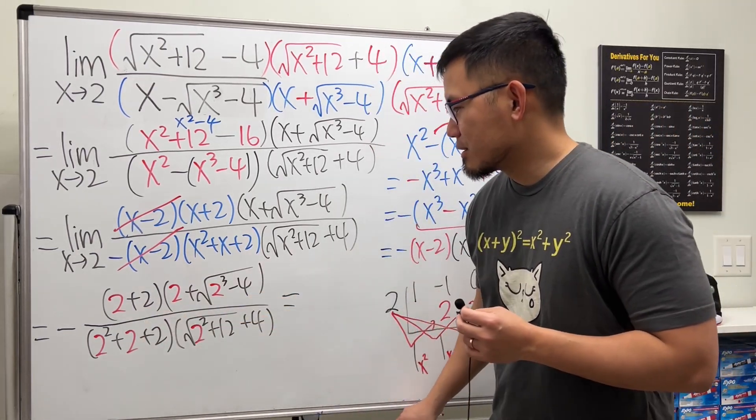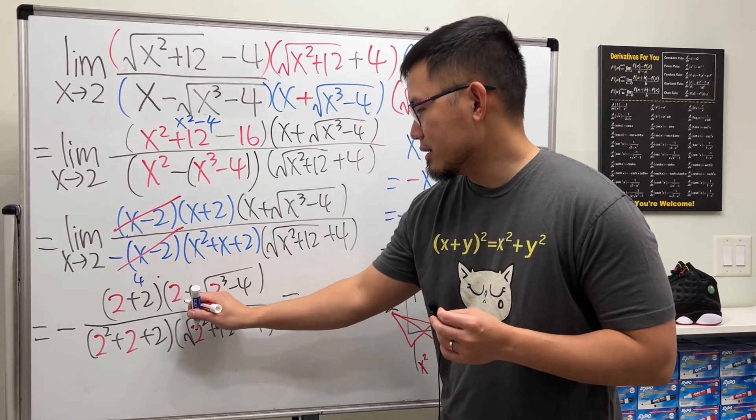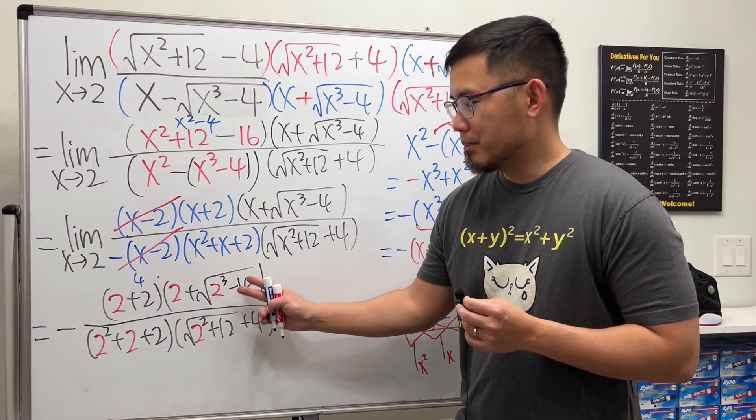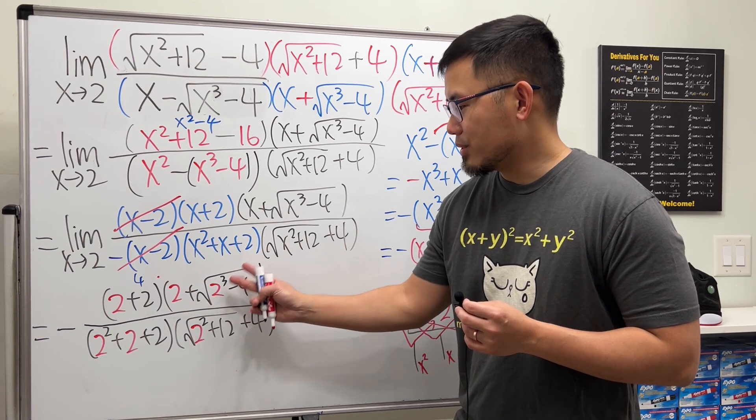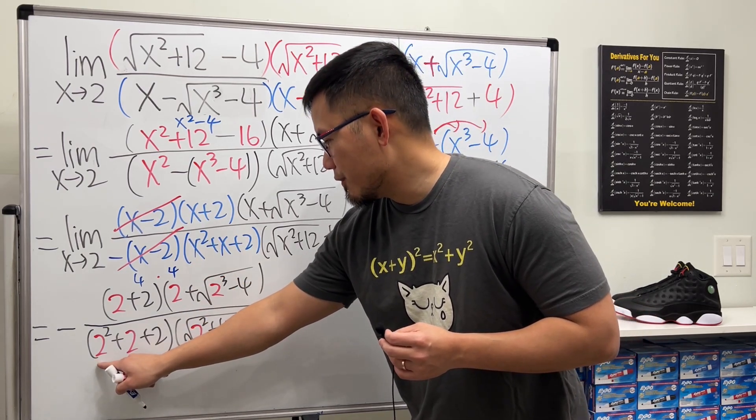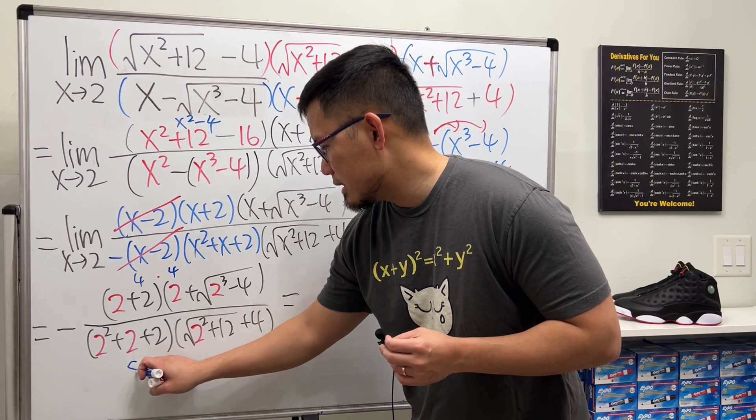Let's see. This right here is 4 times, this right here is 8 minus, that is 4, but square root, right? So it's 2. 2 plus 2, another 4. And then this right here is 4 plus, that is 6 plus, that is 8. Yeah.